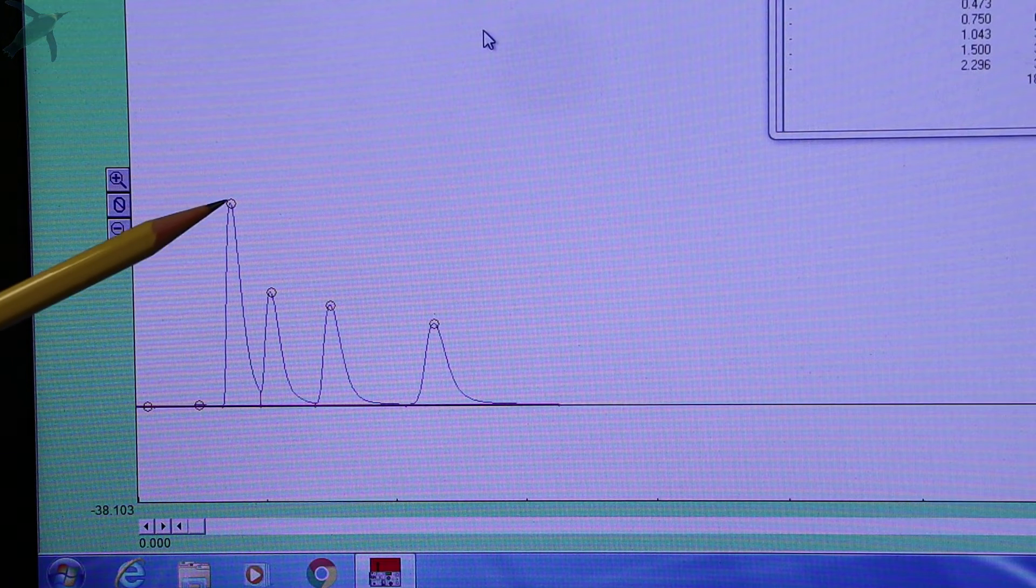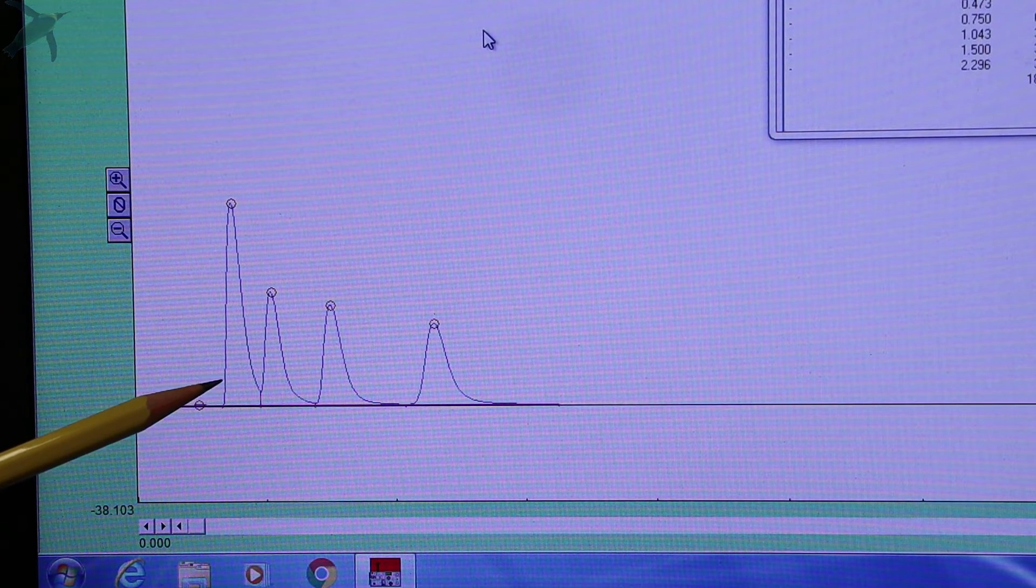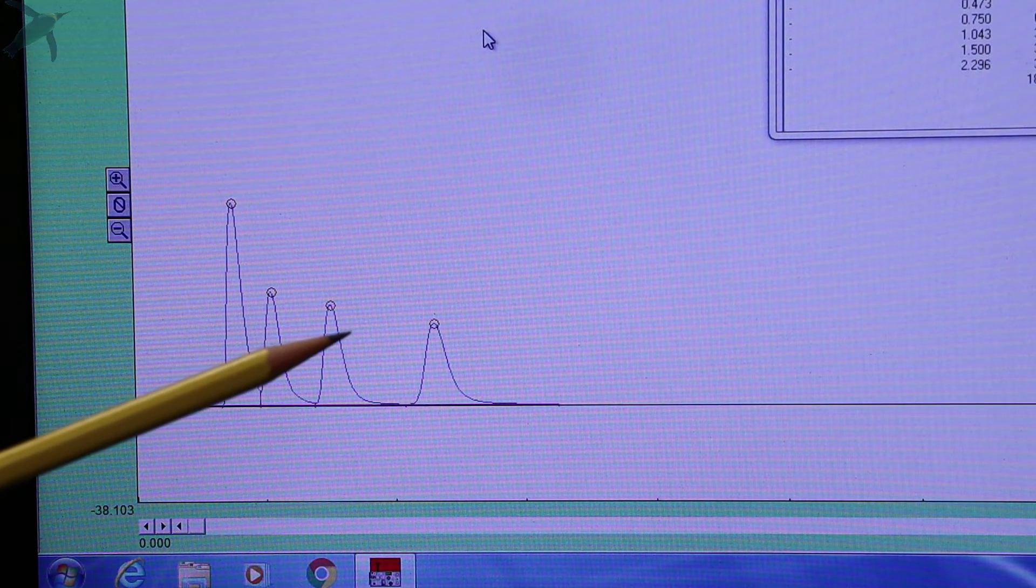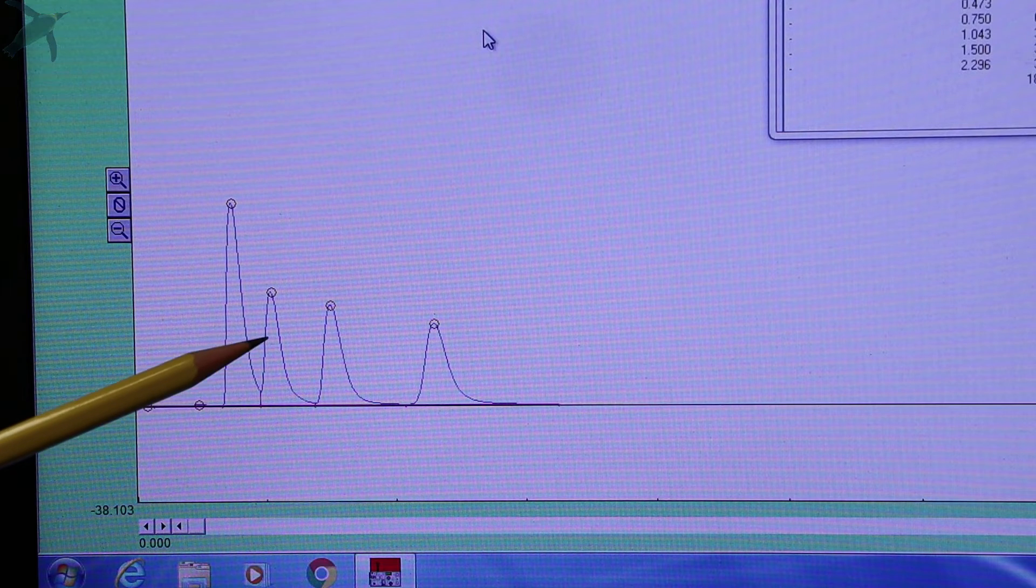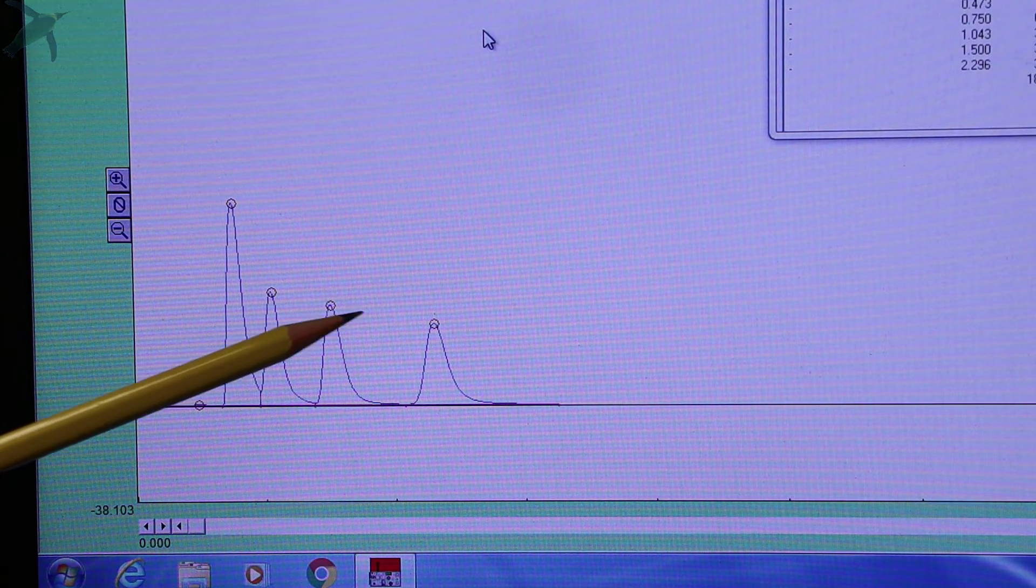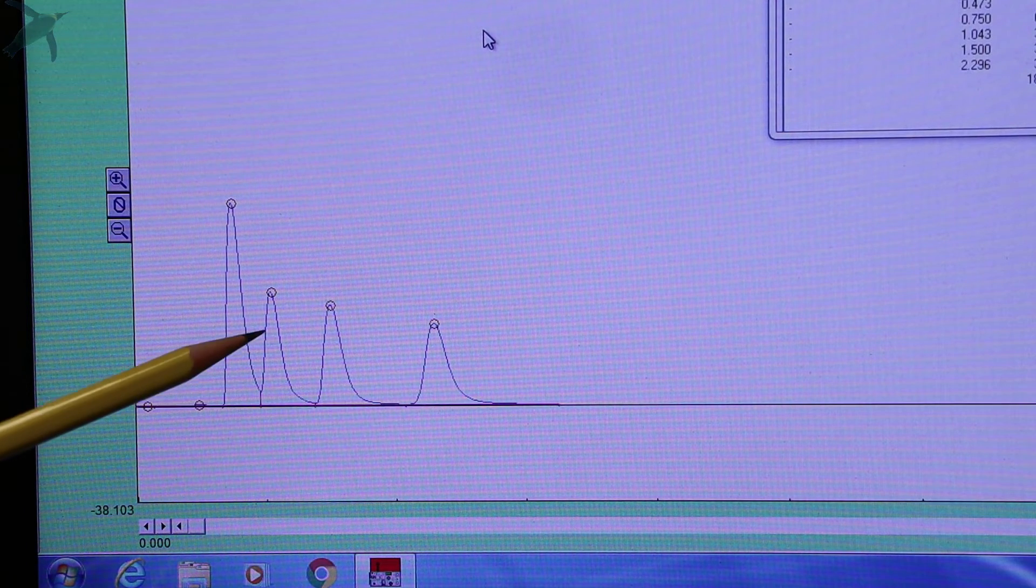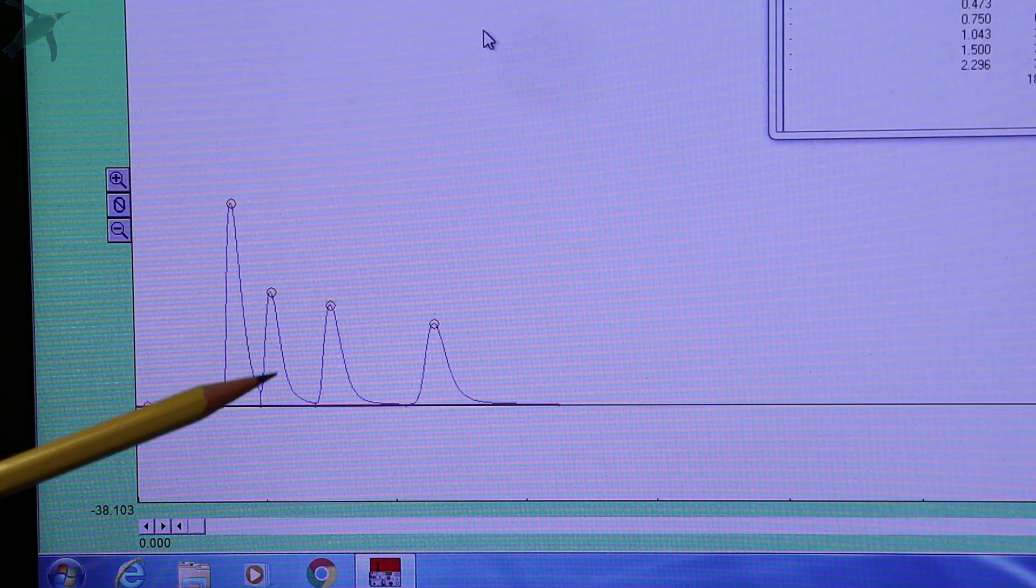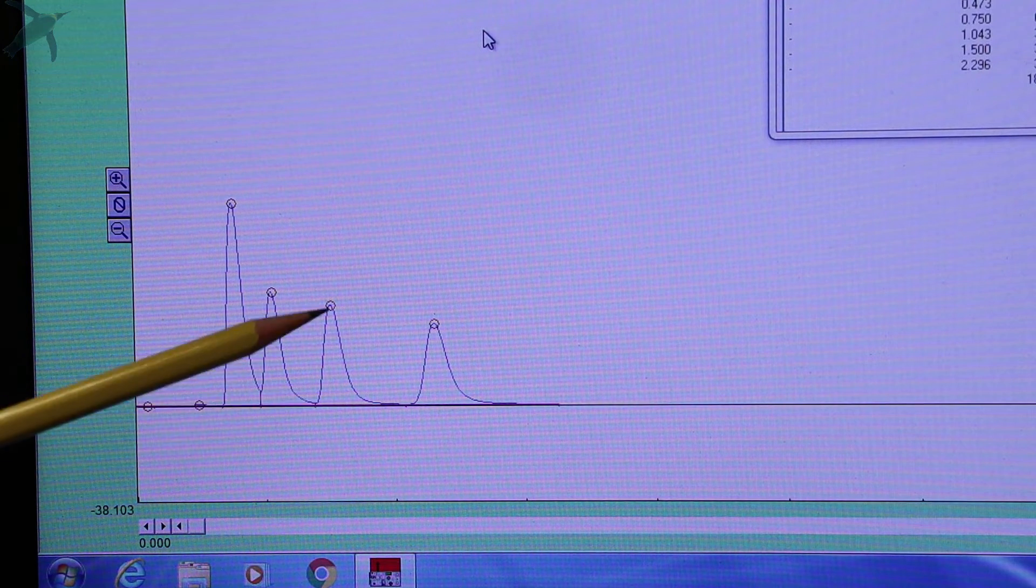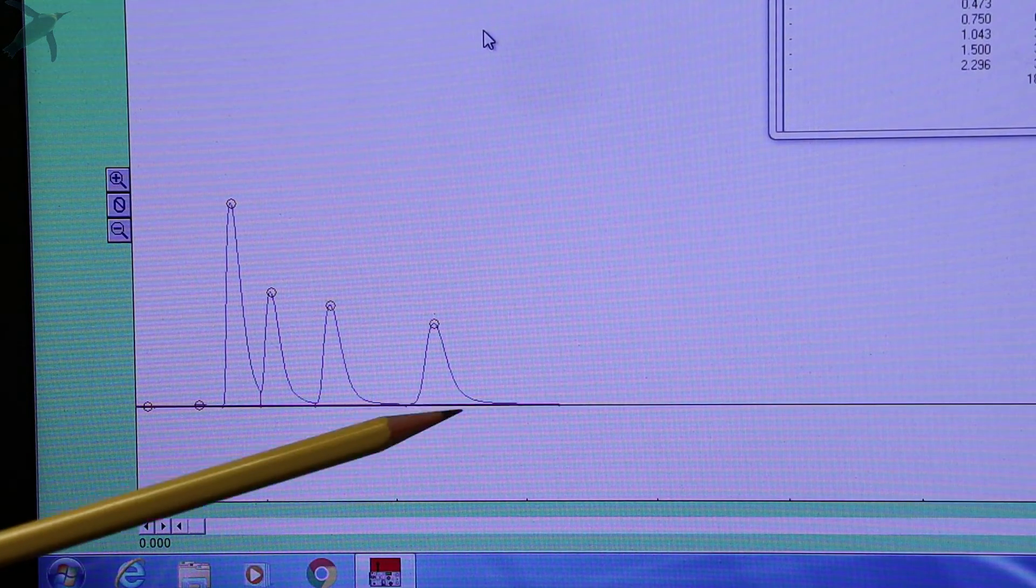If you see, the first peak is ether, the solvent that we use to wash the syringe. Then we have three more peaks. We injected a three component mixture, so that's what we would expect, and they are respectively hexane, heptane, and octane, in increasing retention time. Hexane is the lowest boiling point solvent so it has the lowest retention time, heptane is in the middle, and octane has the highest boiling point so it has the highest retention time.